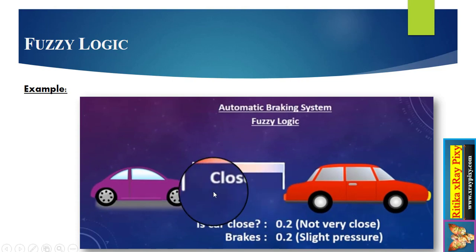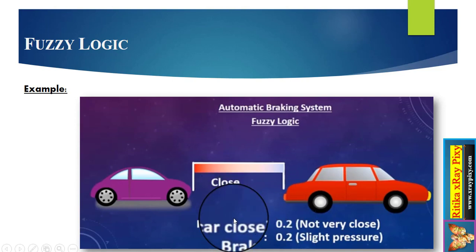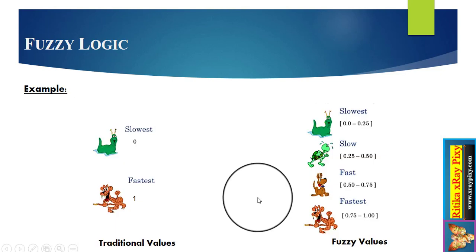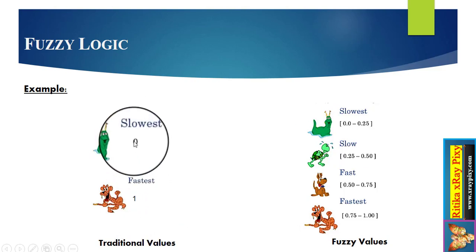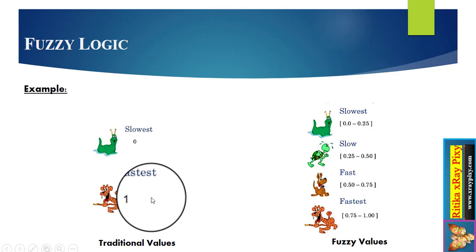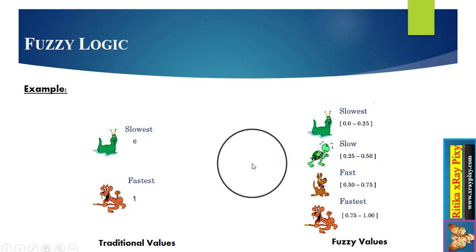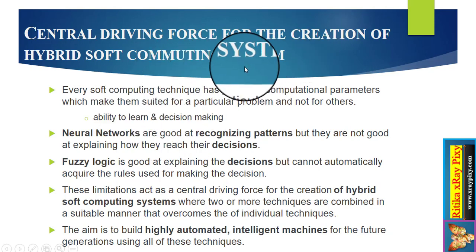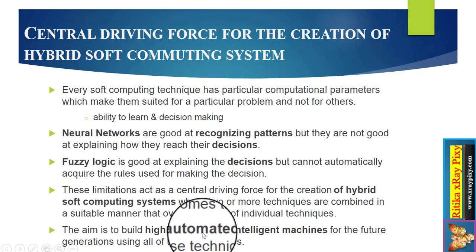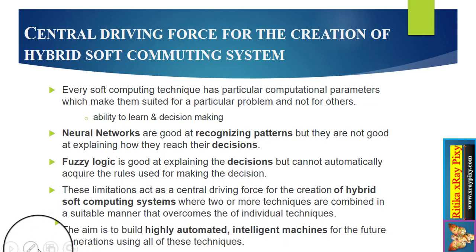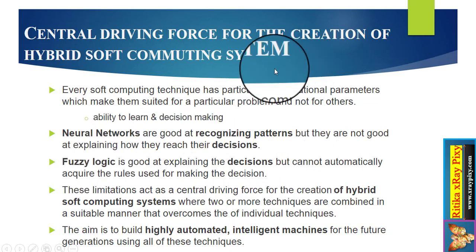For fuzzy logic, if the car is a little bit close, we use a value of 0.2, meaning there is slight pressure on the brake. In another example, for traditional logic the slowest value is 0 and the fastest is 1, whereas fuzzy logic uses values in between. This is why we are trying to create hybrid systems — our aim is to build highly automated intelligent machines using neural networks, fuzzy logic, and hybrid systems.